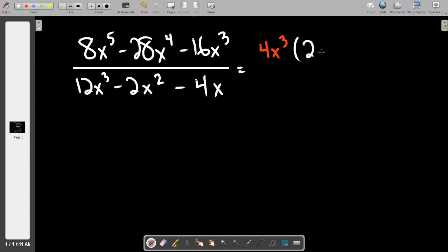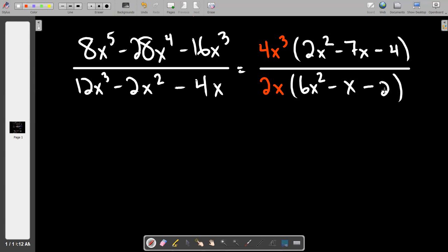What we can pull out of the top is 4 and also x³, and that leaves us with (2x² - 7x - 4). I'm not going to go down the road of factoring that white thing right now. I'm going to do to the bottom what I need to. Get the ball rolling on the bottom. The bottom is the same idea. What can I get out of the bottom? If I pull out 2 and I pull out x, then I'm left with (6x² - x - 2).